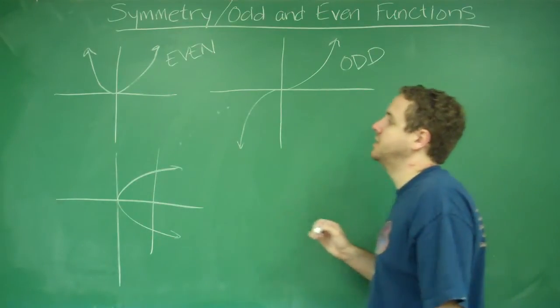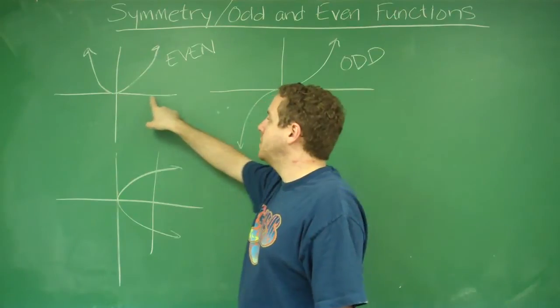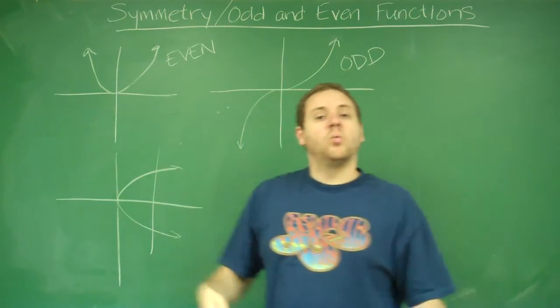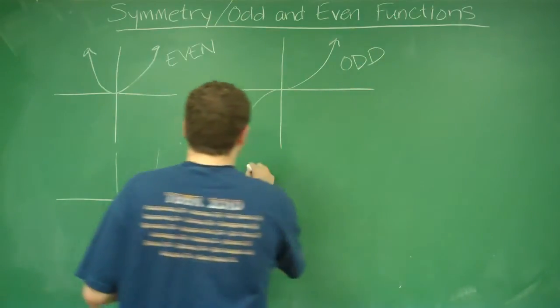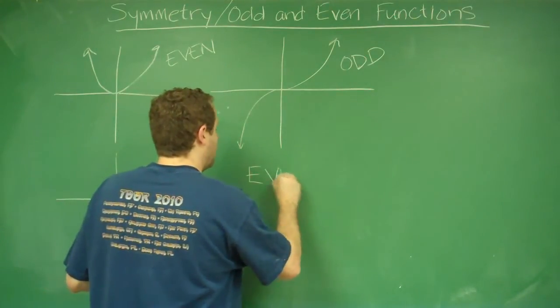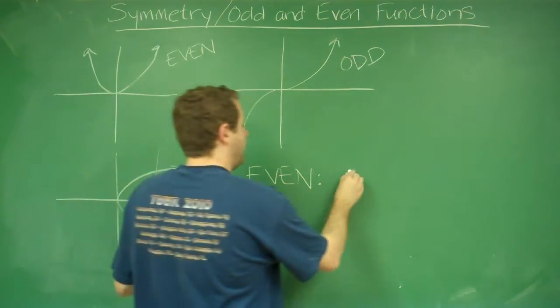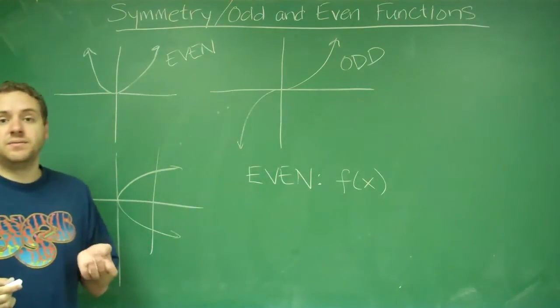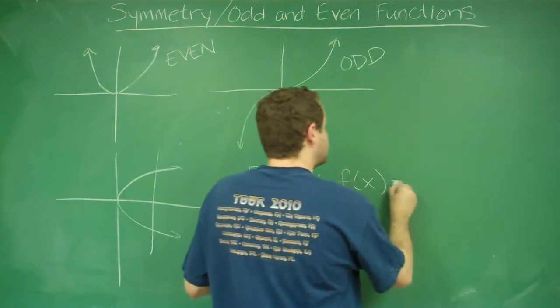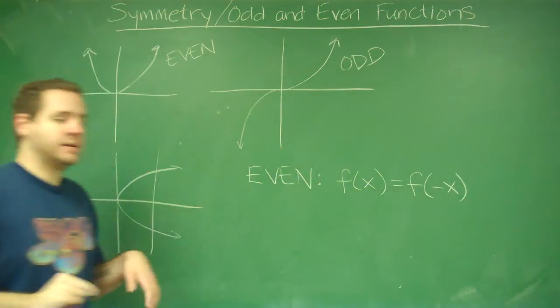So for an even function, the defining factor here is that no matter how far we go to the right or to the left, our y values are always the same. So for an even function, your algebraic notation for that is that f of x, meaning the y at any given x, is the exact same as the y at the opposite of that x.